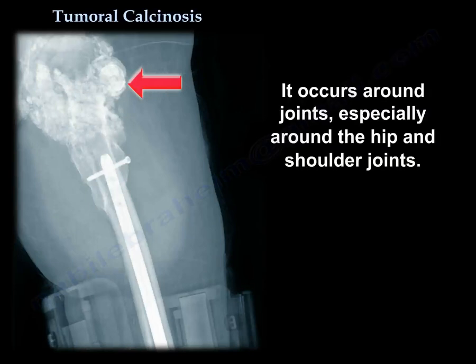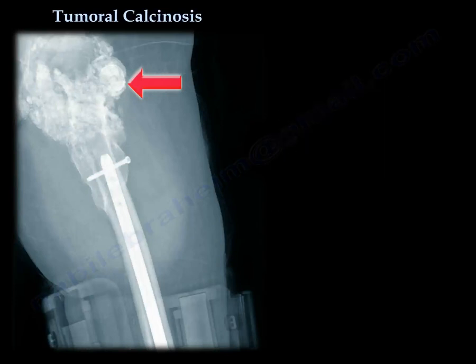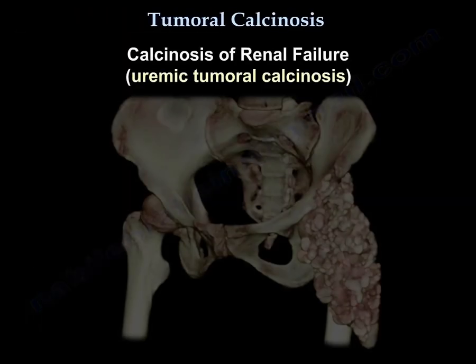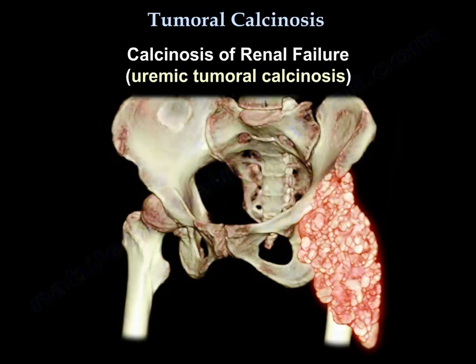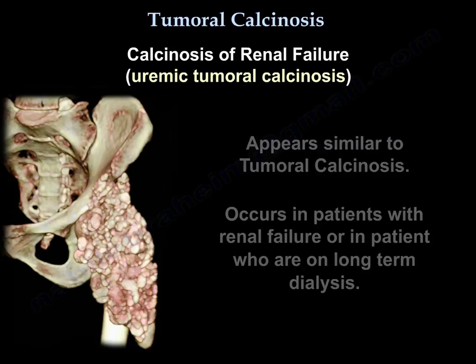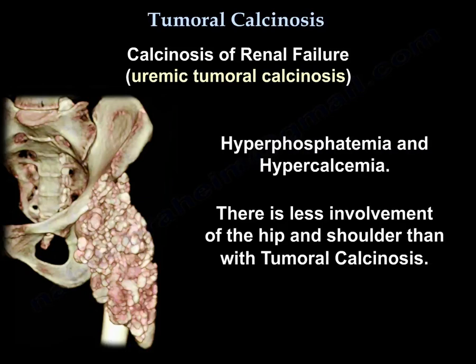It occurs around joints, especially the hip and shoulder. The etiology is not fully understood; there may be a hereditary element. There is another entity called calcinosis of renal failure, or uremic tumoral calcinosis. It looks similar to tumoral calcinosis but occurs in patients with renal failure or those on long-term dialysis, who usually have hyperphosphatemia and hypercalcemia.